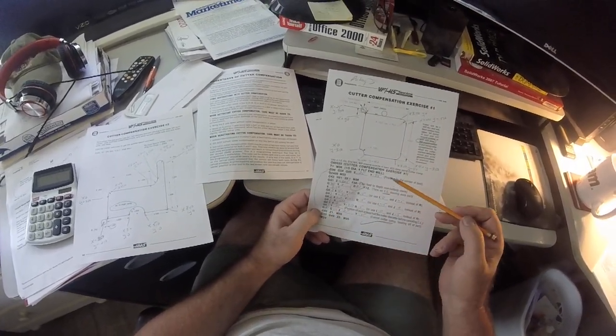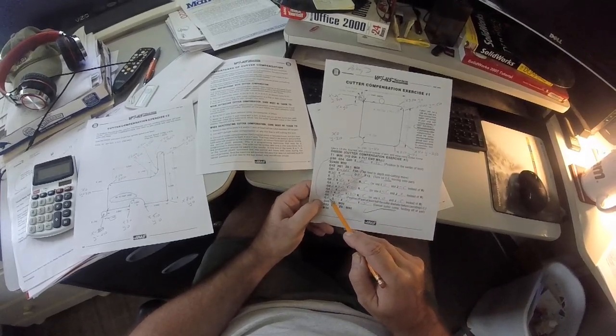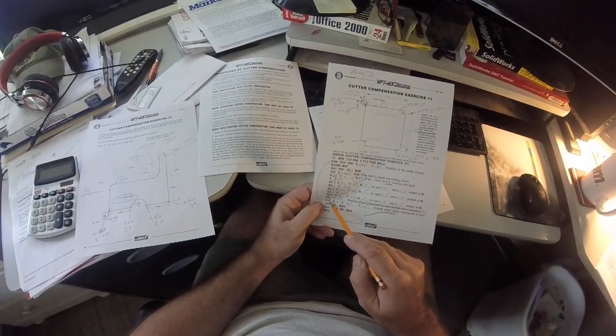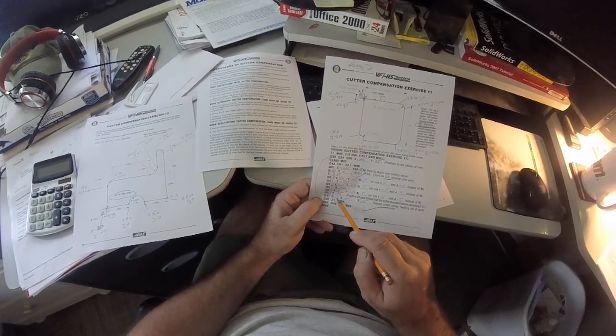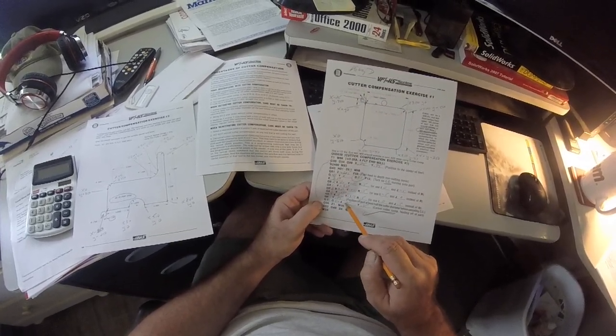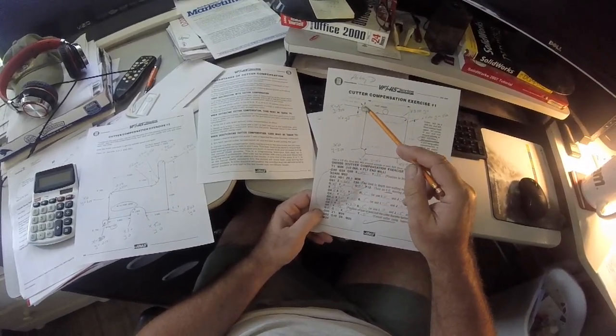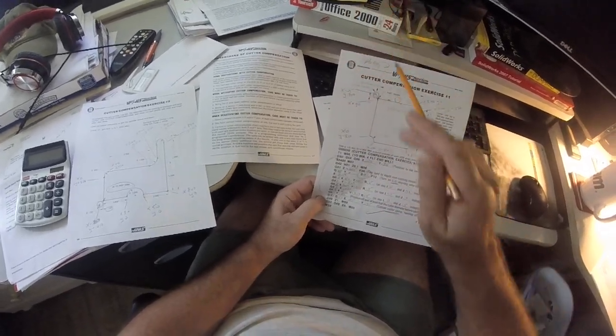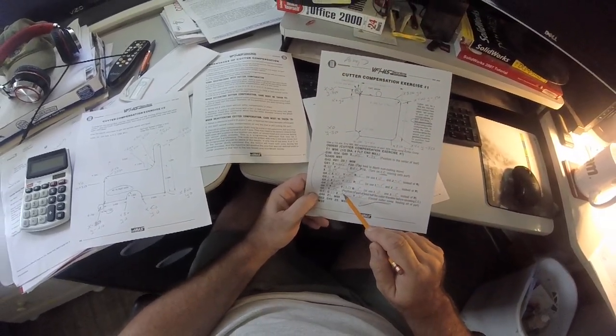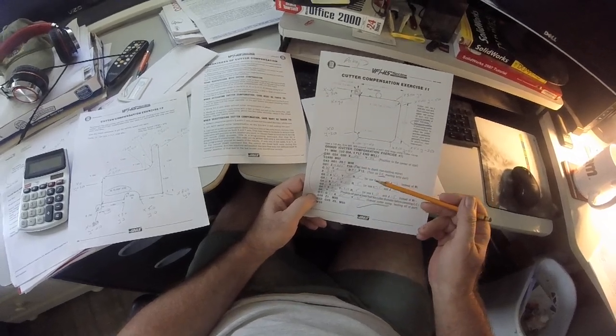And then we're going to exit, and we have to turn the compensation off, we have to cancel it. So it's still a G1 move, but G40 is canceling the G41. We're shutting it off. So when we're shutting it off, we have to go to tool center position. And this is not critical, it just needs to be away from the part. So .25, .35, that's where we started, so that's got to be clear.